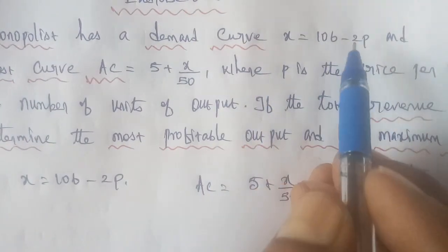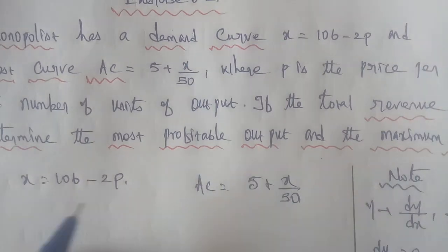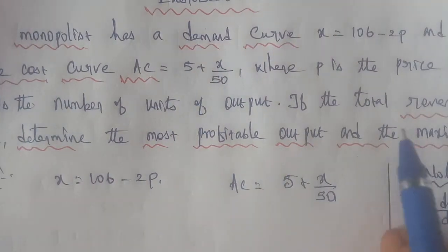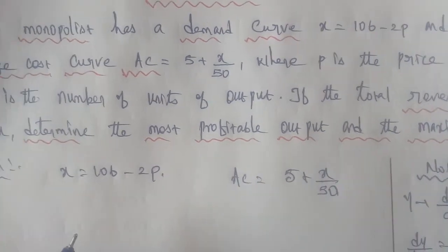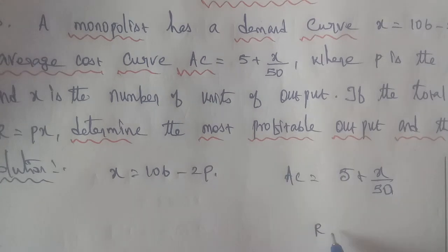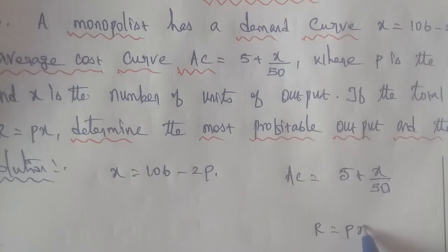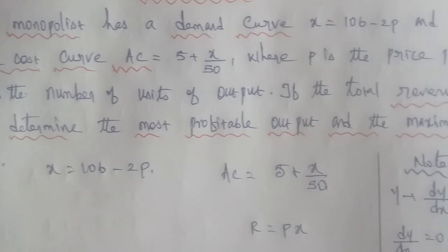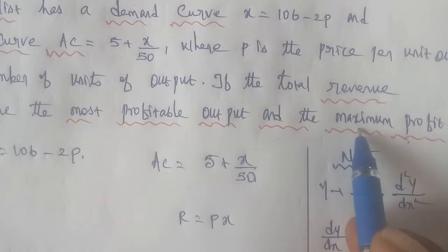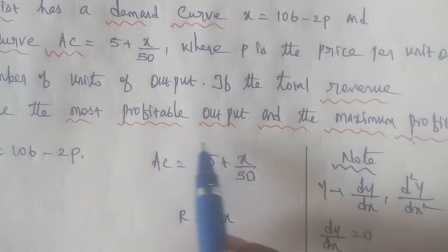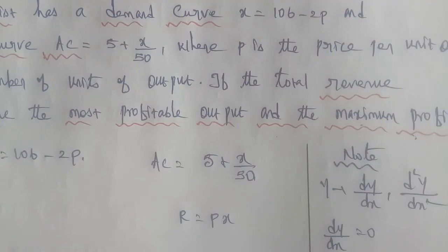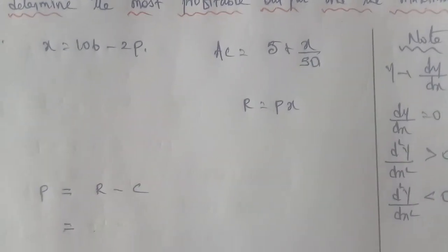Given: x equal to 106 minus 2p, average cost curve AC equal to 5 plus x by 50, and total revenue R equal to px. The profit formula is: profit P is equal to revenue minus cost, that is P equal to R minus C.